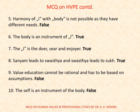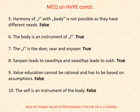Question 5: Harmony of I with body is not possible as they have different needs — true or false? Correct option is false. Question 6: The body is an instrument of I — true or false? True. Question 7: The I is the doer, enjoyer, and sharer — true or false? True.